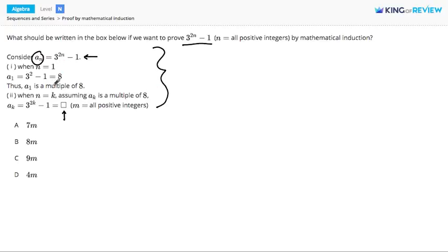Induction starts at some value of n, so say n equals 1. When n is 1, a_1 becomes 3 to the 2 minus 1. 3 squared is 9, 9 minus 1 is 8.